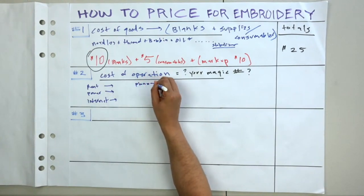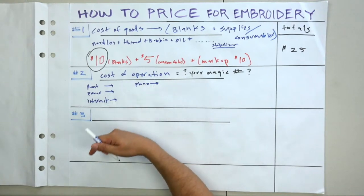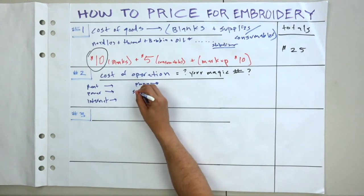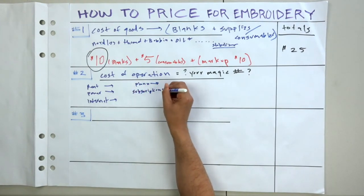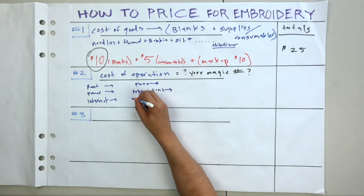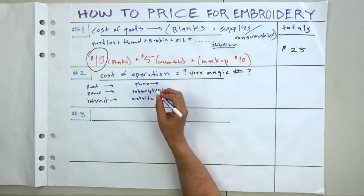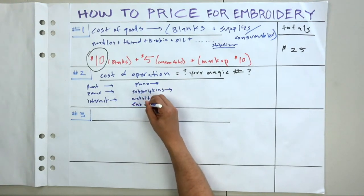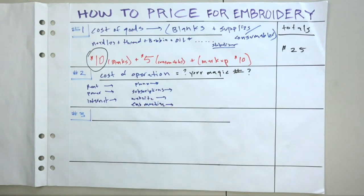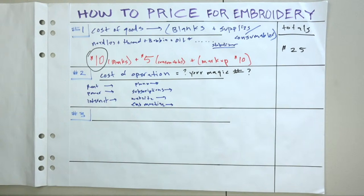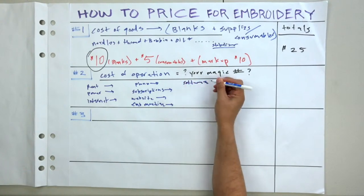Some costs include rent, power, internet, phone — have a spreadsheet listing all this. This information can change from month to month, so it's good practice to do this at least every month. Also consider subscriptions, running a website — you pay for all this every month. Your embroidery machine, and many of you don't just have one machine — you have DTG and other types — so you're paying for multiple machines.